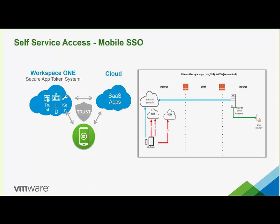The benefits of mobile SSO are that there's no longer the need to implement an Identity Manager and AirWatch connector to sync, authenticate, and provide app access. To integrate with newer versions of Identity Manager and AirWatch, you simply implement the AirWatch cloud connector for directory sync and authentication, making it easier to set up and configure for IT admins. Mobile SSO also removes the need for internal certificate authority integration, which makes the environment less time-consuming to manage.